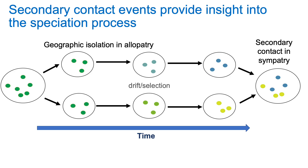Identifying reproductive isolating barriers that prevent gene exchange between taxa remains a central goal of evolutionary biology. Secondary contact events, like the one shown in this cartoon here, provide an exciting opportunity to study the evolution of reproductive barriers and speciation.